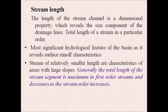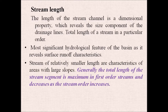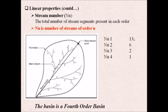Another linear parameter is the stream length — the length of the stream channel which reveals the size component of the drainage lines, specifically the total length of the stream in a particular order. This is the most significant hydrological feature of the basin as it reveals surface runoff characteristics. Streams of relatively small length are characteristic of areas with large slopes. Generally, the total length of stream segments is maximum in first-order streams and decreases as order increases, consistent with first-order streams being most numerous.